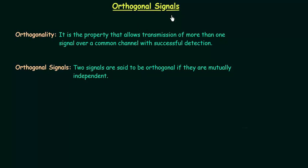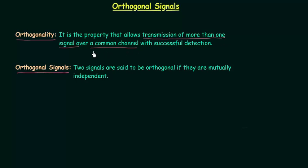In this lecture we will study orthogonal signals. Orthogonality is the property that allows transmission of more than one signal over a common channel with successful detection. So there are three things in orthogonality: transmission of more than one signal, a common channel, and successful detection at the receiver's end. These three conditions must be satisfied in case of orthogonality.